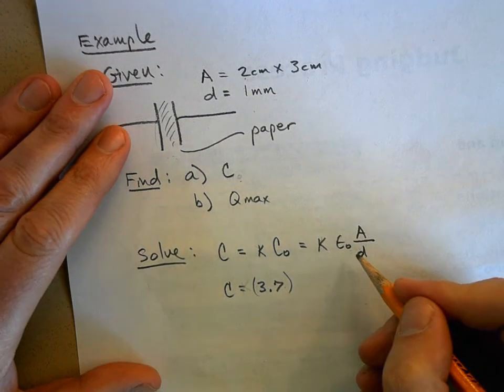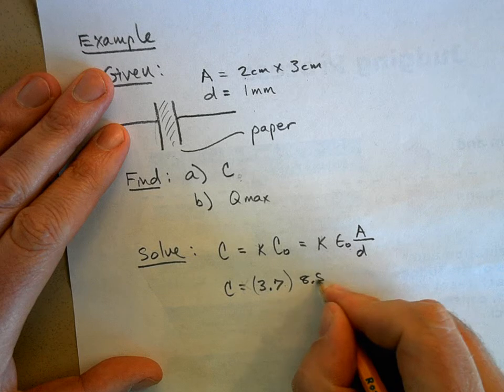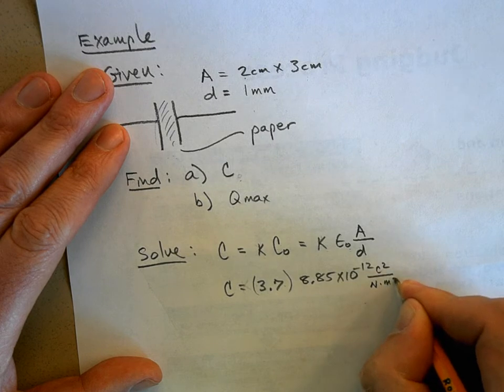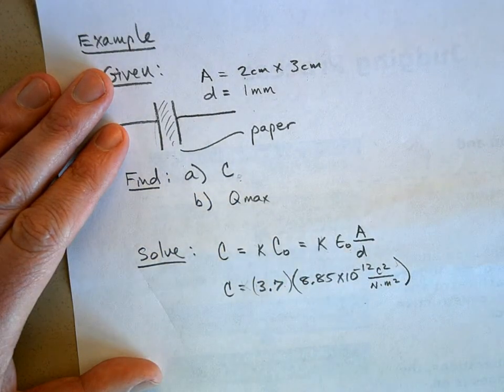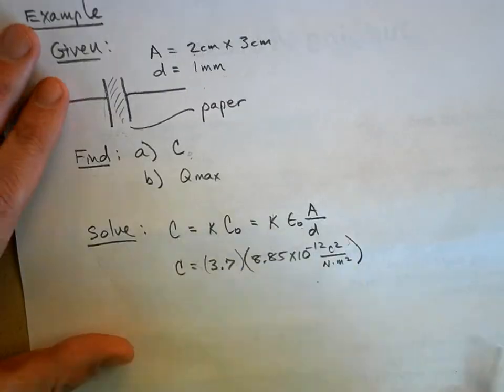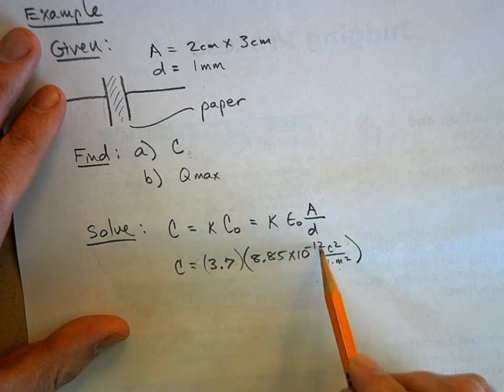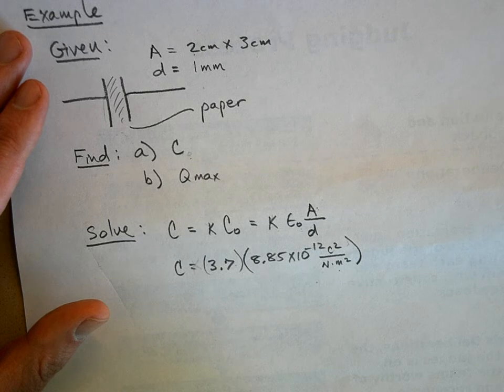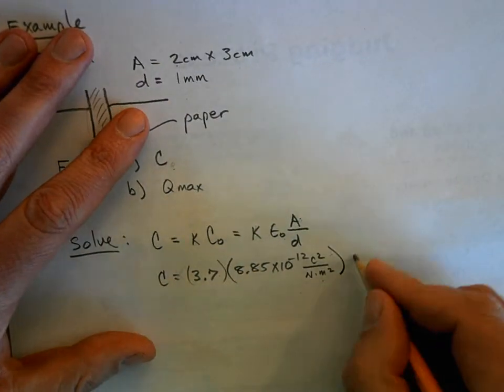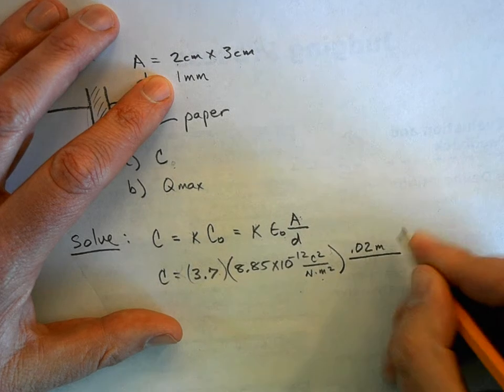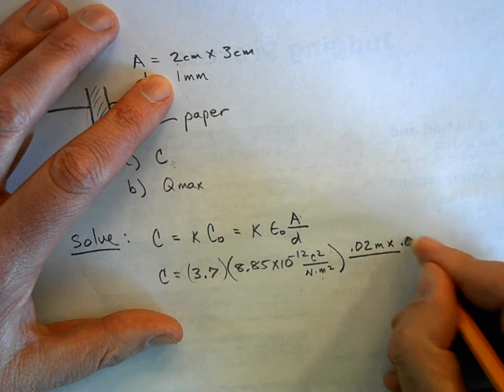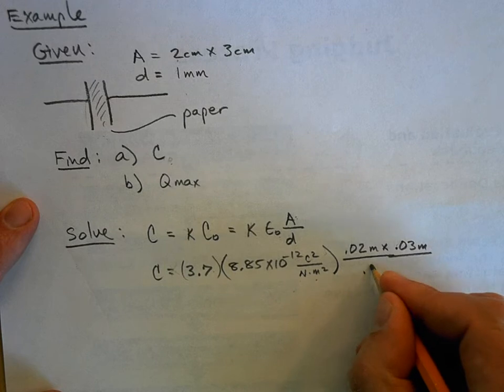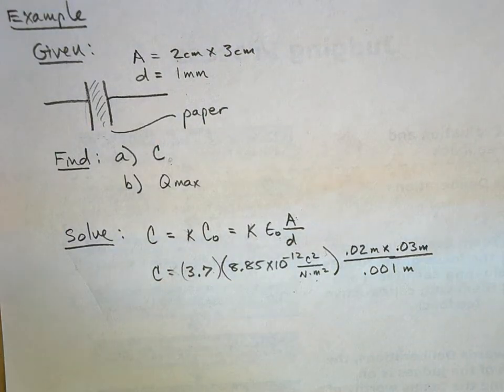Now what was epsilon naught? Epsilon naught was 8.85 times 10 to the negative 12 coulomb squared per newton meter squared. Now, look in here, everything's in terms of meters squared, or meters. So if we're going to multiply by the area and the distance, it has to be in terms of meters. So the area is going to be 0.02 meters times 0.03 meters, and the distance between the plates has got to be 0.001 meters.